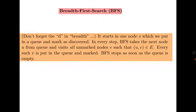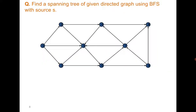We have already discussed the algorithm; you can quickly read it. It starts with node S, which we put into the queue and mark as discovered. Then it takes the next node and visits all its neighbors — for all edges UV belonging to the edge set, it visits all neighbors, keeps marking them, and keeps moving.